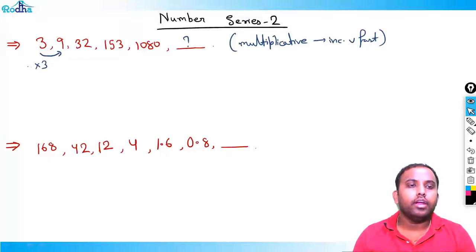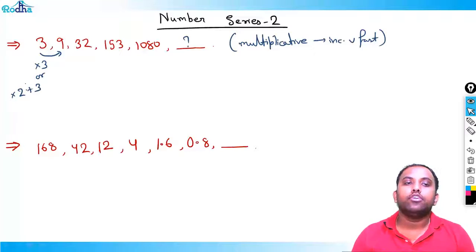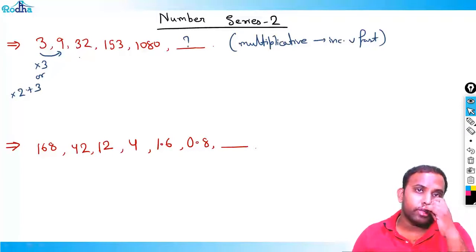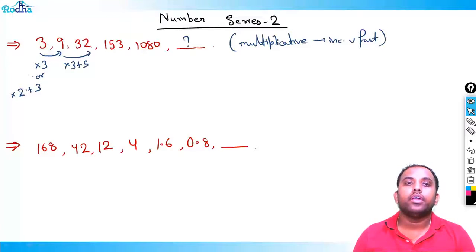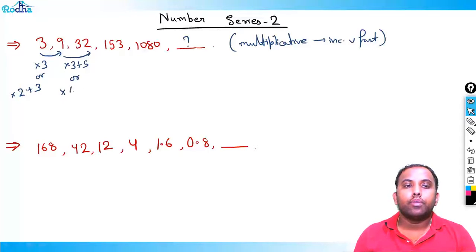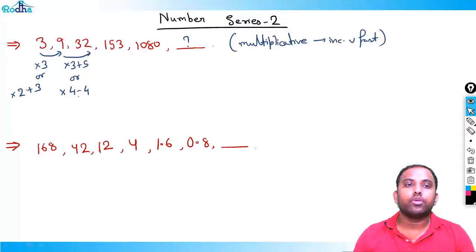From 3 to 9, what is getting multiplied? It could be ×3, or it could be ×2 + 3. Three into three is also nine, and three into two plus three is also nine, so it's a bit confusing. Moving to the next term: 9 to 32 — nine into three plus five is 27+5=32, or nine into four minus four is 36−4=32. Two ways to get 32.